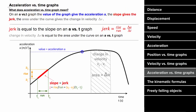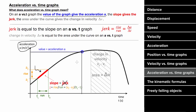How do you interpret an acceleration versus time graph? The value of the vertical axis gives you the acceleration at a particular moment in time. The slope equals the jerk, which isn't asked about much, but you do need to know that the change in velocity is represented by the area under this graph. If you can find the area under the graph between two times, that area equals the change in velocity experienced by the object between those two times.